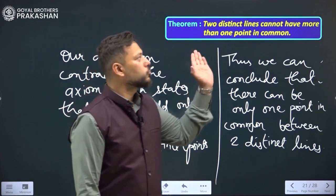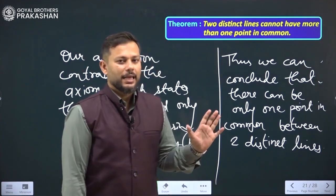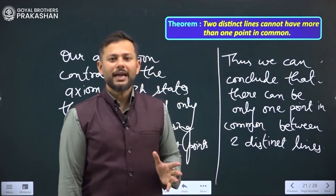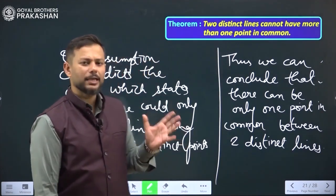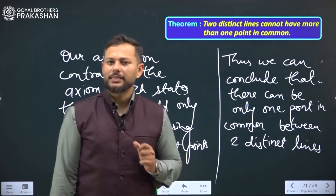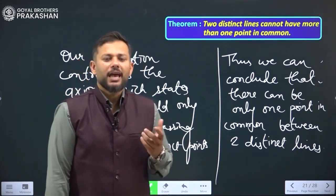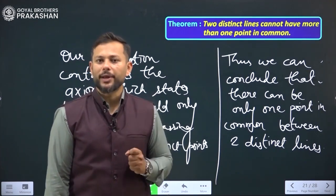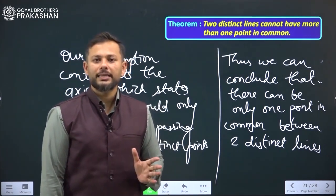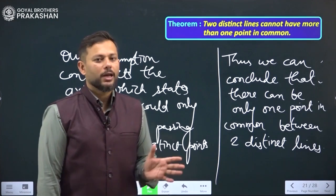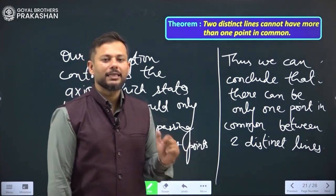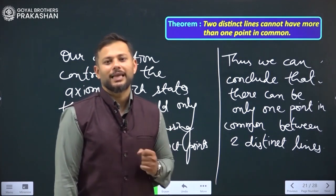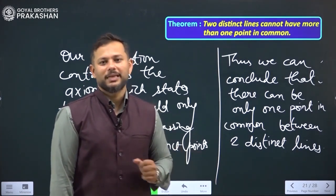This theorem was about two distinct lines cannot have more than one point in common. For that we have first assumed that there are two lines which have two points in common. But since if we have two points in common, it will have two lines passing between two points and it is going to contradict the axiom 5.1. So our assumption is wrong and we conclude that there can be only a single point between two distinct lines in common. So I hope this makes it clear. Thank you so much.